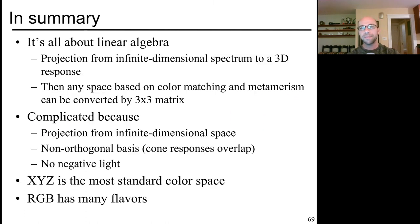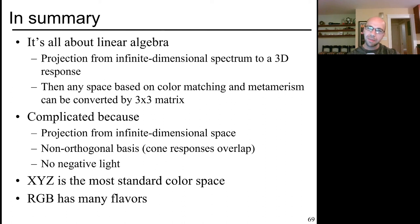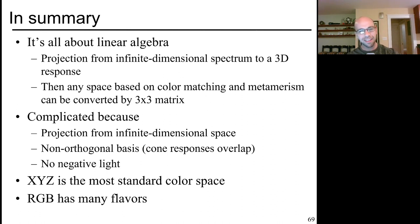In summary, all this color space stuff is just linear algebra. We're projecting from an infinite dimensional spectrum to a three-dimensional color response in your eye. All of these different color spaces are just linear — or in some cases nonlinear — changes of basis, usually convertible by three-by-three matrices. The complications come from projecting from infinite-dimensional to finite-dimensional spaces, working with non-orthogonal bases, and not being able to have negative light. The most standard color space is CIEXYZ, which is roughly just the amount you turn on the three CIE primaries to match different colors, and this corresponds to one flavor of RGB.